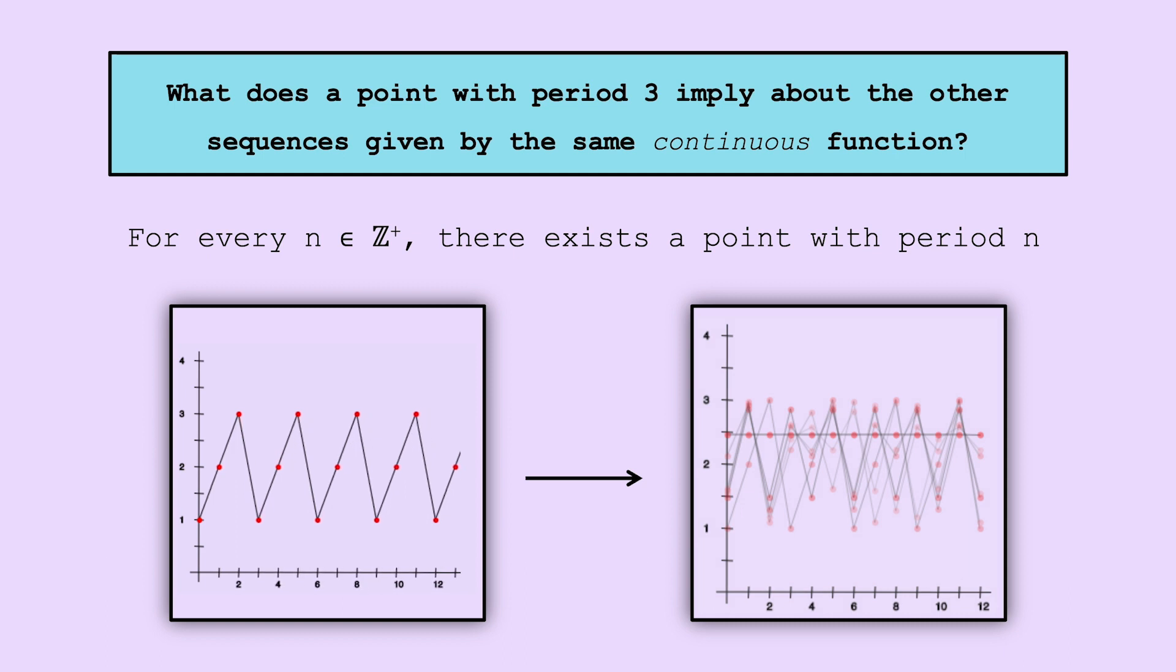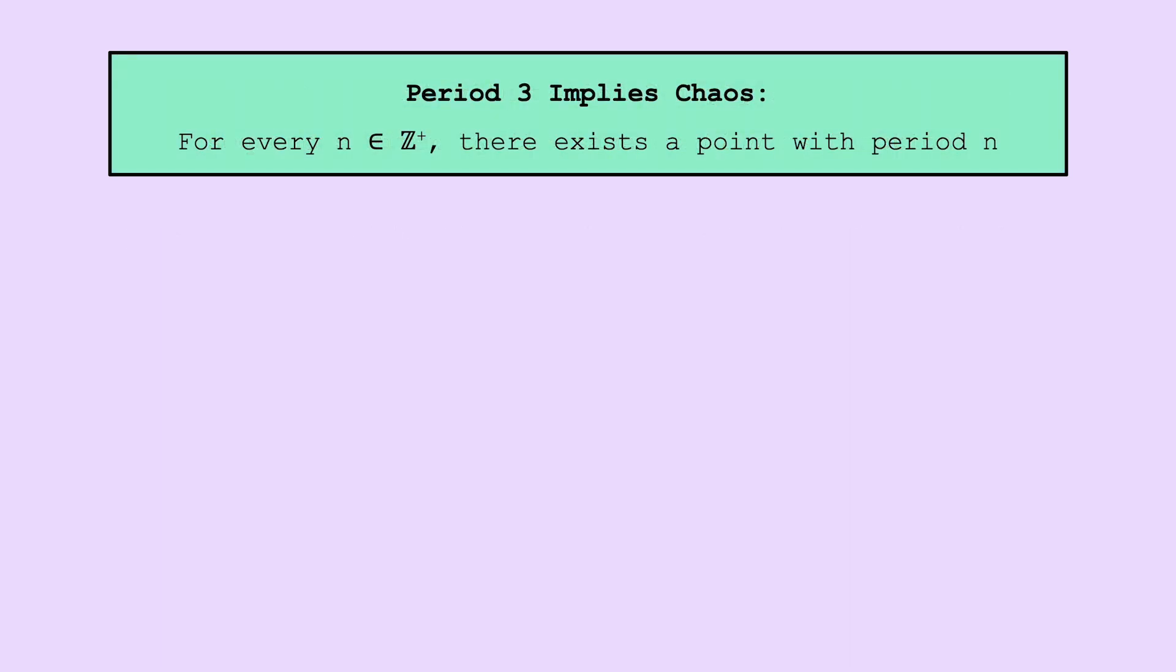Just to be clear, this is different than saying every point is periodic. In fact, as you'll see, something closer to the opposite is true. The name for this theorem is period 3 implies chaos.